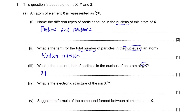What is the electronic structure of the ion X²⁻? The element X had 16 protons, so it would have had 16 electrons. But since it's an ion with a charge of negative 2 in total, it would have 18 electrons. The electronic structure would be 2, 8, and 8.